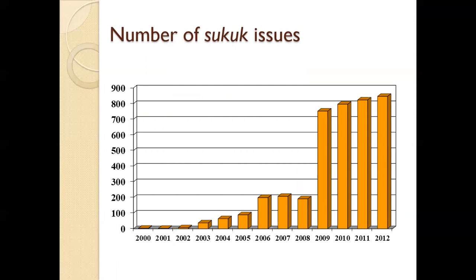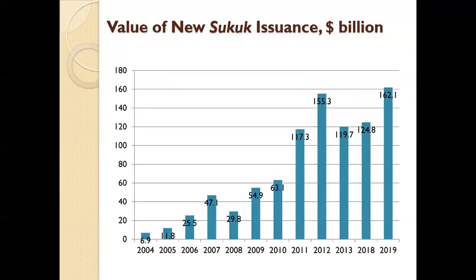The Sukuk concept was first coined in 1988 at the Africa Academy conference in Jeddah. In 2019, Sukuk issuance reached 162.1 billion dollars globally, and it was expected to exceed 200 billion by 2021. In 2004, the figure was a staggeringly low 6.9 billion.